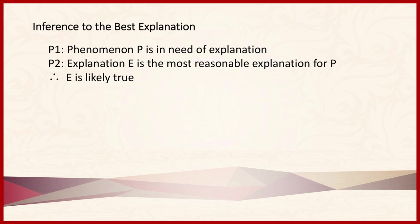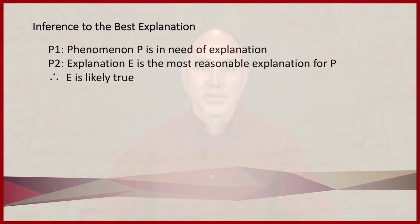Not only can it sometimes be difficult to distinguish between arguments and explanations, but in fact, they often work together. A clear example of this appears in the argument form, inference to the best explanation. The general form of an inference to the best explanation is: premise one, phenomenon P is in need of explanation; premise two, explanation E is the most reasonable explanation for P; and therefore, conclusion, explanation E is likely true. To be able to form an inference to the best explanation, we of course need to be able to evaluate and compare the relative strengths of competing explanations.